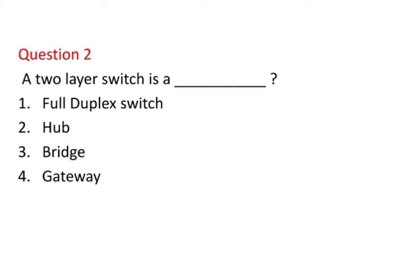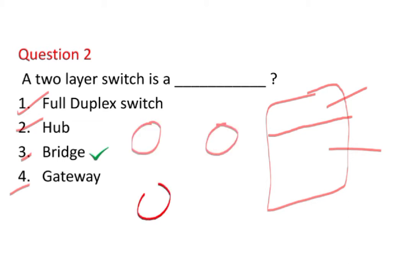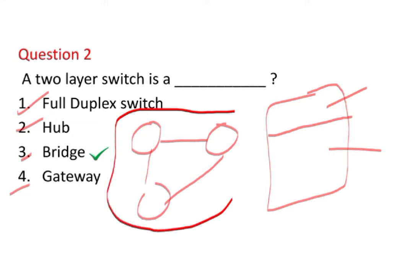The next question is: a two-layer switch is a — full duplex switch, hub, bridge, or gateway? This is a basic question. A switch has certain layers. A two-layer switch — that is layer one and layer two — can be called a bridge. A bridge connects multiple LANs together to form a large LAN, increasing the coverage area of the network.